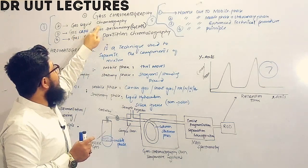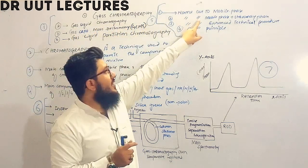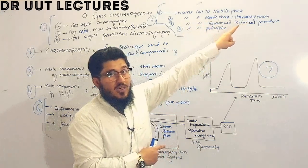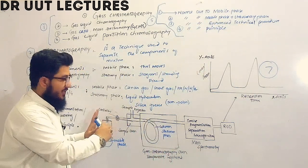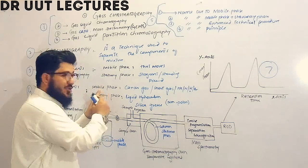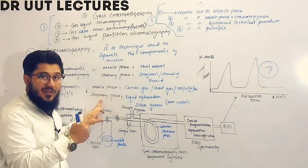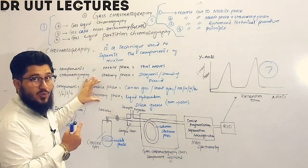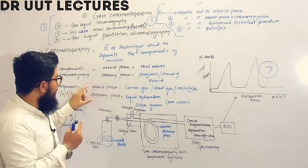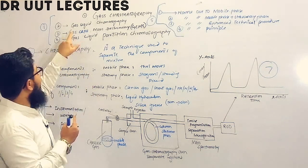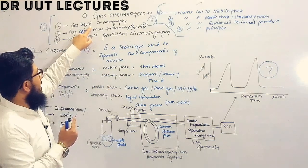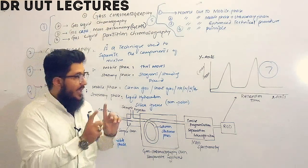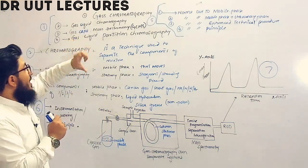The second name, gas-liquid chromatography, is given because of both the mobile phase and the stationary phase. The mobile phase is gaseous and the stationary phase is liquid, so this chromatography is also known as gas-liquid chromatography.